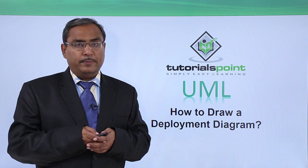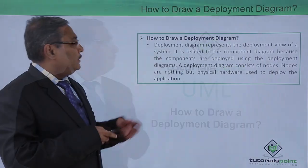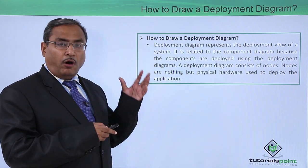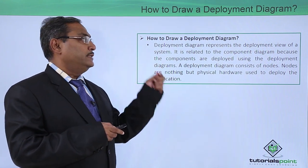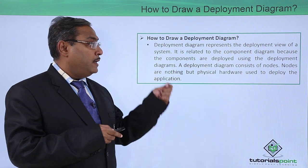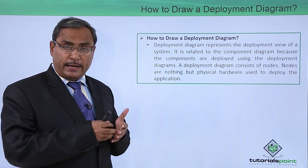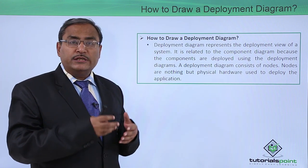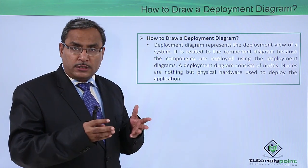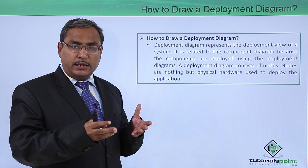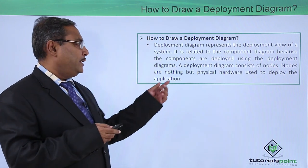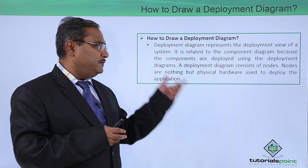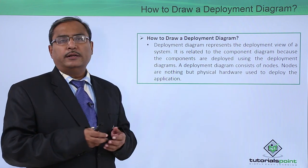How to draw a deployment diagram? A deployment diagram represents the deployment view of a system. It is related to the component diagram because in a deployment diagram, we depict how components are getting deployed onto the different nodes. A deployment diagram consists of nodes, and nodes are nothing but physical hardware used to deploy the application.